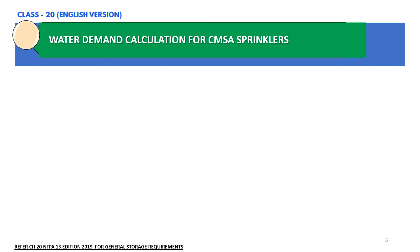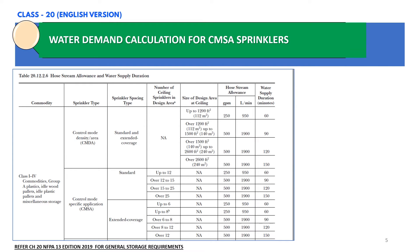Now we are going to calculate the hose stream allowance and also the water supply duration. I have extracted a table from NFPA 13 which shows the hose stream allowance and water supply duration based on the commodity classification. In our scenario, we have class 4 commodity and we are considering CMSA sprinklers. The design area uses 15 sprinklers, which falls in the row for over 12 to 15 sprinklers. Based on this row, the hose stream allowance is 500 GPM and the water supply duration is 90 minutes.